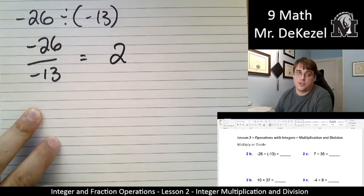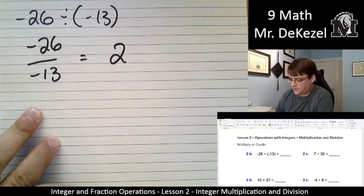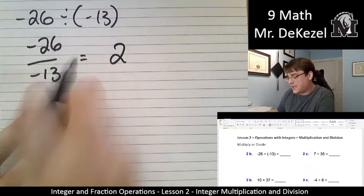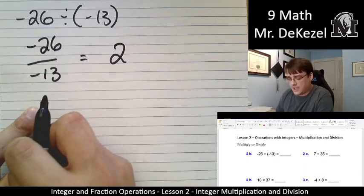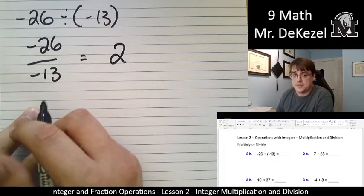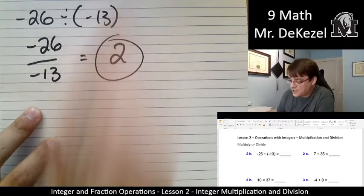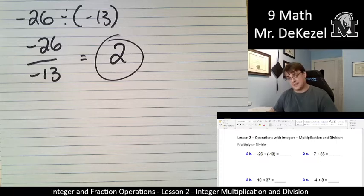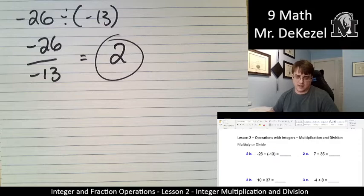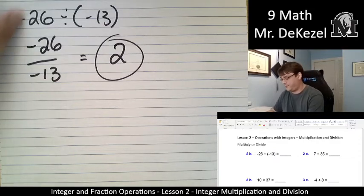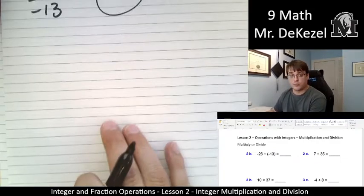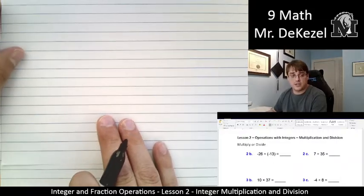The answer, though, should be positive or negative. That's the question. They are both the same sign. They're both negative. A negative times a negative means that the answer is positive. So this is just 2. Negative 26 divided by negative 13 is 2. They're both negative, so our answer is positive. Let's go just to the right on our question sheet.